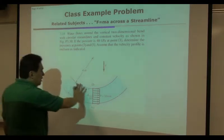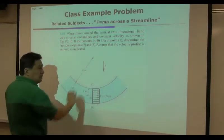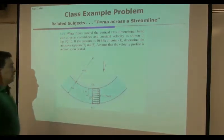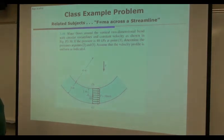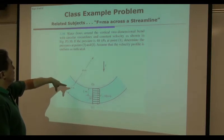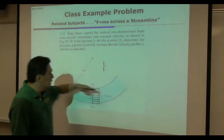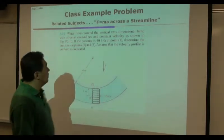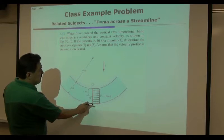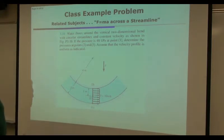Water gets in and goes out like this, so this is the curvature, and gravity is involved. You have acceleration in the direction normal to the path of the streamline. If that happens, how much pressure change do you have — that is the question. This is the vertical two-dimensional bend with streamlines. You can draw any number of streamlines in this flow field. This is a steady flow. Suppose the pressure is 40 kPa at point 1 — what is the pressure at location 2 and location 3?